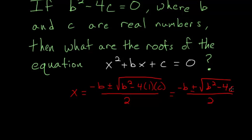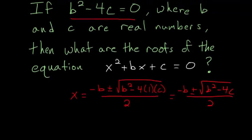And this b squared minus 4c we're given in the beginning of the problem, that that's just equal to zero.